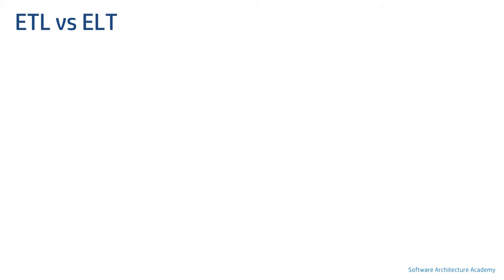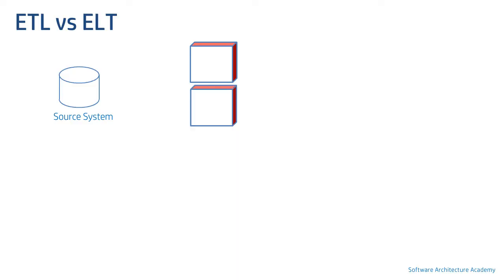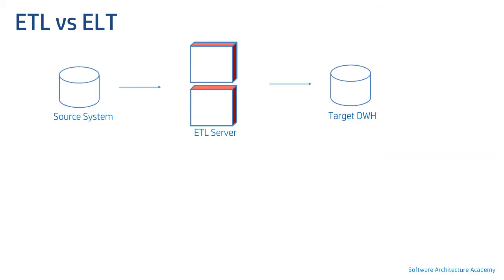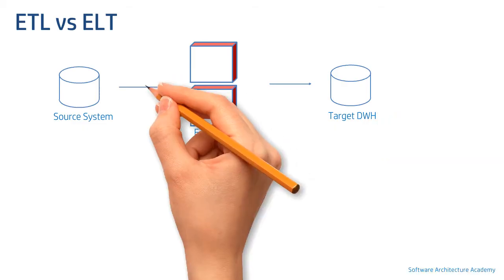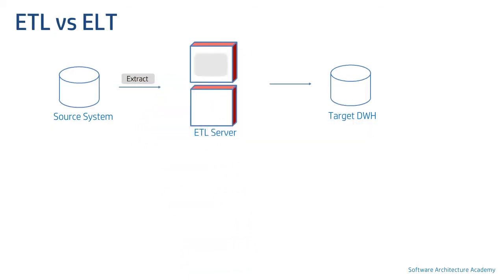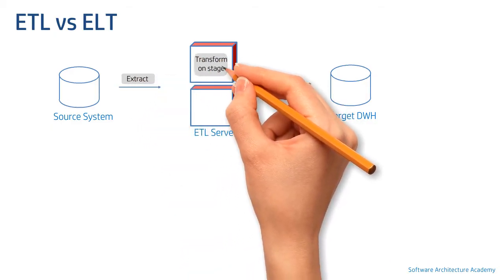Next we will be discussing three ETL versus ELT patterns. These are based on where the transformation is exactly performed. The ETL server extracts data from a source system, performs transformations, and then loads it into the target data warehouse. This is the ETL pattern.